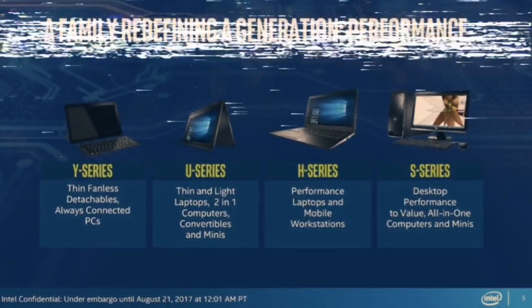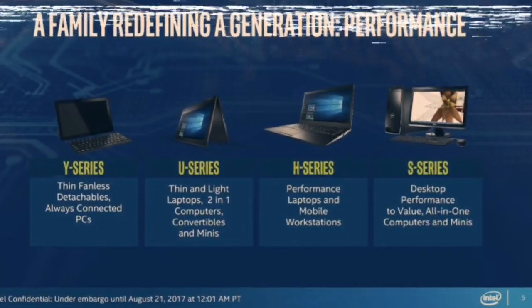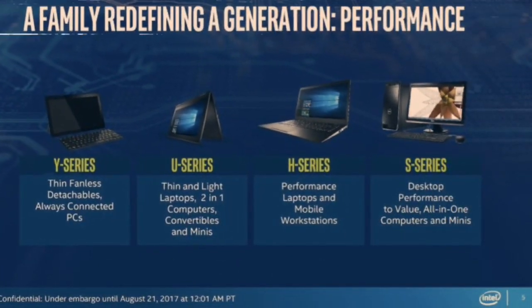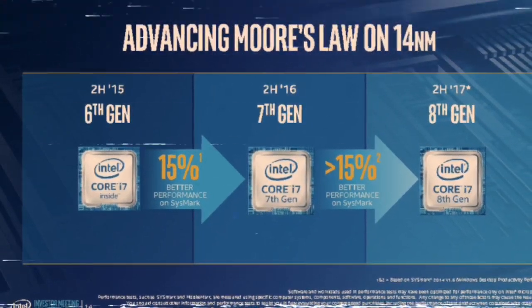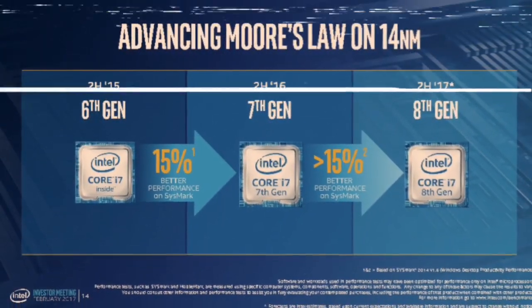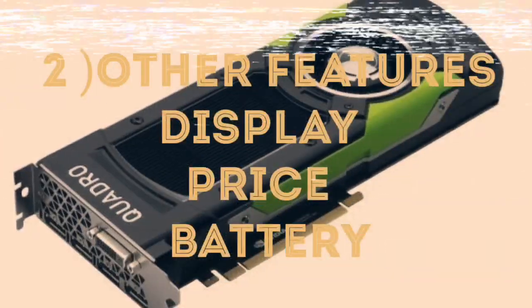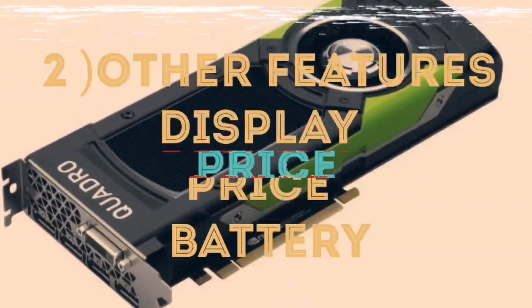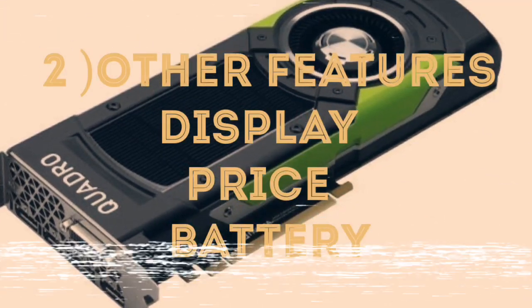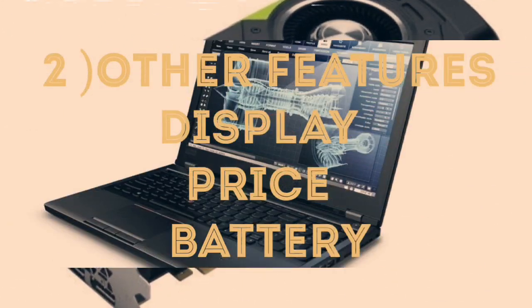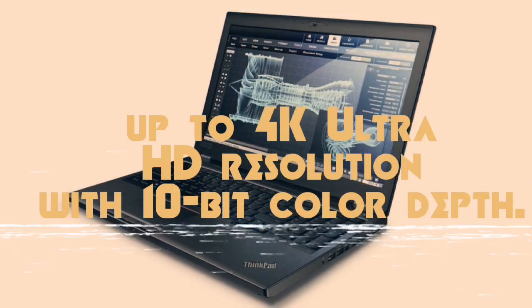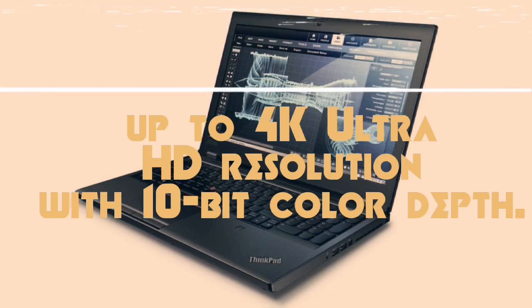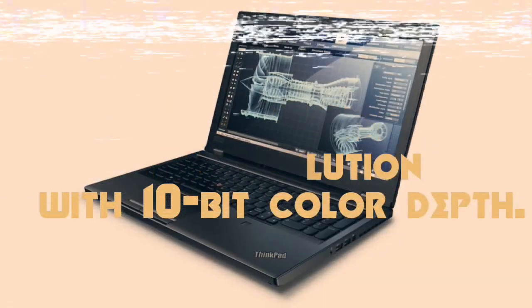This is amazing — they show the Y series for thin fans, and use a thin and light laptop. The H series and mobile H series are available in ThinkPad, with 8th generation support. Also watch for 6th and 7th generation options. Among other features: display, price, and batteries. Starting with up to 4K HD resolution, and up to 5K resolution options are available here.